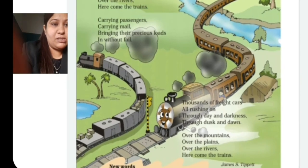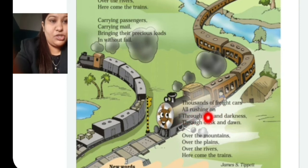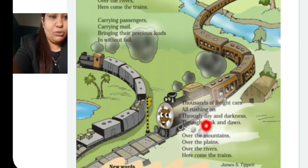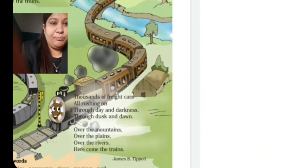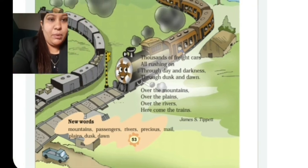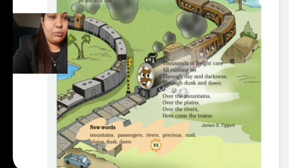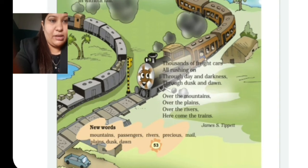Then next: 'Thousands of freight cars' — freight cars are the wagons that carry goods. 'All rushing on, through day and darkness, through dusk and dawn.' Dusk is early evening and dawn is early morning. So trains run through all of these — through dusk and dawn. Then the stanza repeats: 'Over the mountains, over the plains, over the rivers, here come the trains,' as we studied earlier.